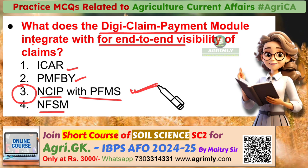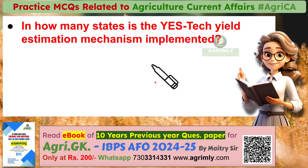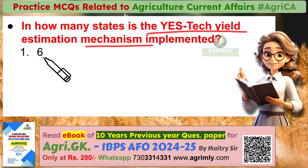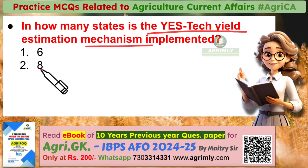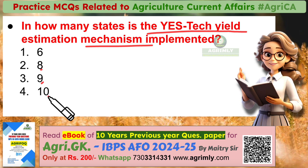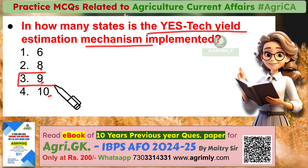Question two: In how many states is the YesTech Yield Estimation Mechanism implemented? Options: six, eight, nine, or ten. The correct answer is nine. The YesTech Yield Estimation Mechanism has been implemented in nine states to improve the accuracy and efficiency of yield estimations.